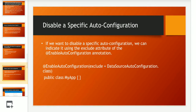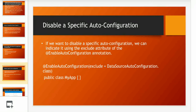The next question was: how to disable a specific auto-configuration? If you want to disable a specific auto-configuration, you can indicate it using the exclude attribute of the @EnableAutoConfiguration annotation. I've also given sample code for it — inside @EnableAutoConfiguration, you can pass the class name you want to exclude.